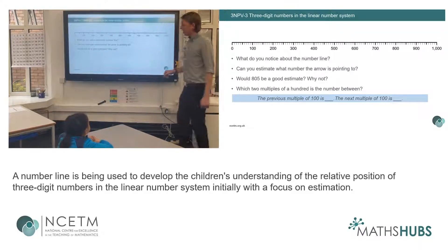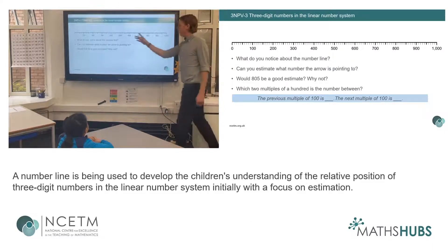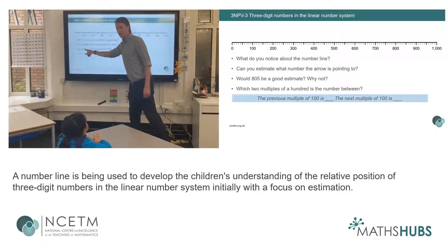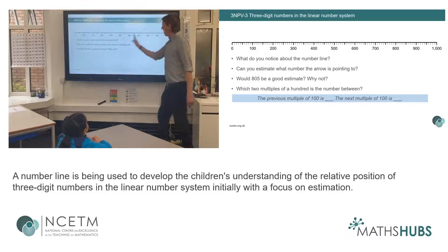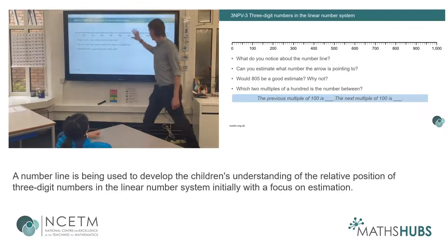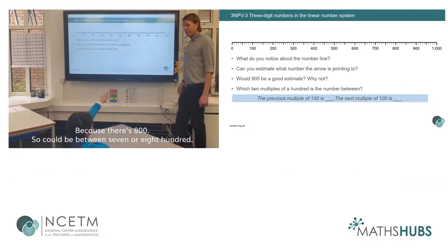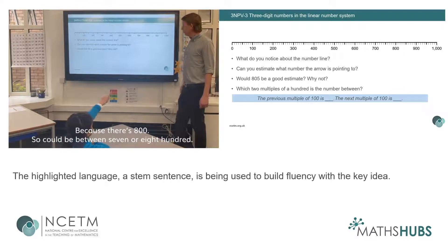I want you to think if 805 is a good estimate. Whereabouts on this number line might you be looking if I'm telling you about 805? Whereabouts on the number line would you be looking? Towards this side? Towards this side? Why this side? Because there's 800, so it could be between 700 and 800.